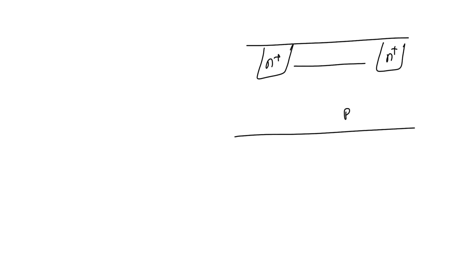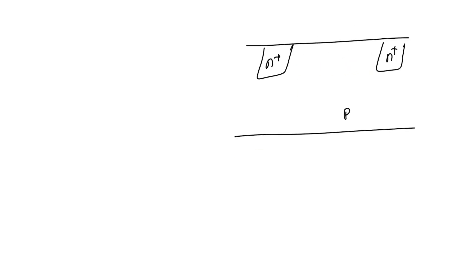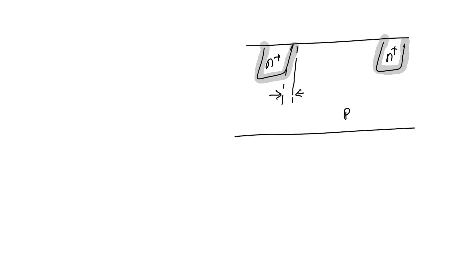For a long channel MOSFET, the n-plus source and drain regions are very much apart — L is large, say 10 microns. There is a depletion region around the drain that shortens the channel length, but in a long channel MOSFET this part is negligible compared to L. We can neglect it. In a short channel MOSFET, however, channel length modulation comes into picture because of these depletion regions.